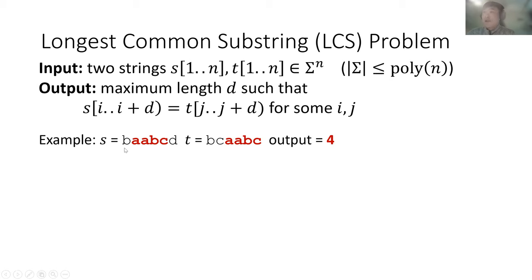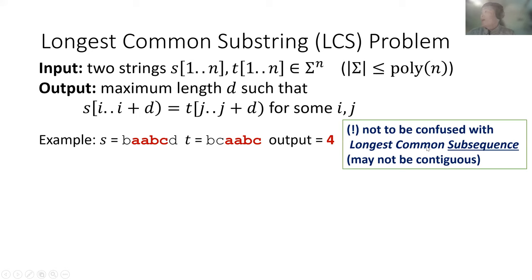Here is an example. We have two strings of length six, and their longest common substring is A, A, B, C, which has length four. Note that there is another different problem called longest common subsequence, which unfortunately also has the acronym LCS. But today we're looking at the longest common substring problem, where a substring is a contiguous part of the string.